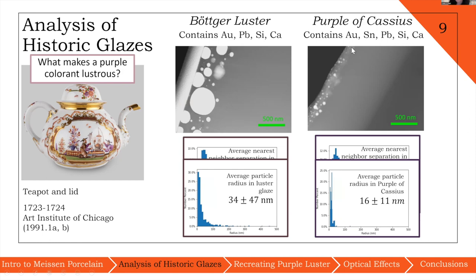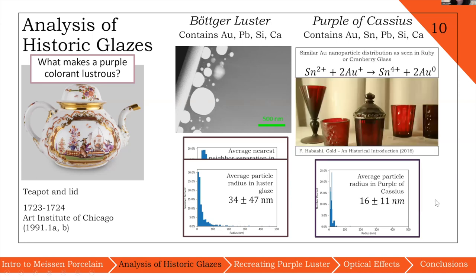Within Böttger luster, we have a variation of small nanoparticles mixed with these really large ones that are hundreds of nanometers thick. We measured the particle separation, the nearest neighbor separation in the two places, and they were more or less comparable. But what's really striking is the difference in the radius of the particle sizes. With purple of Cassius, we have much more uniform gold nanoparticles. But with Böttger luster, we have a really great deviation.